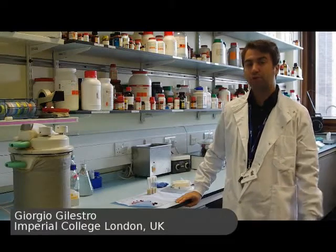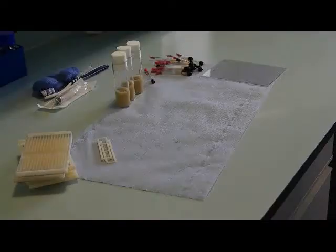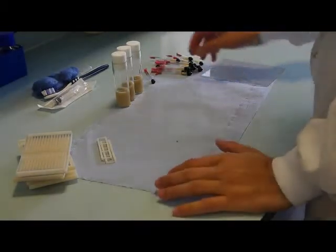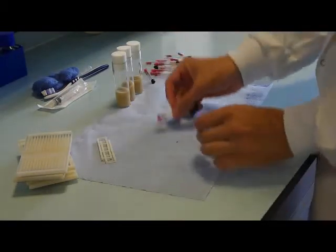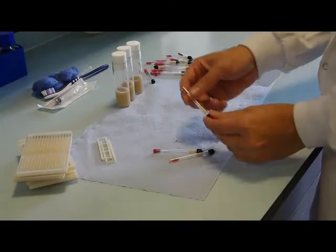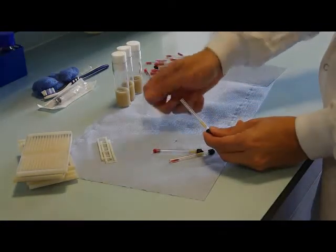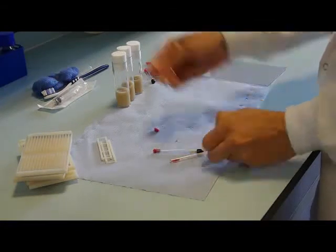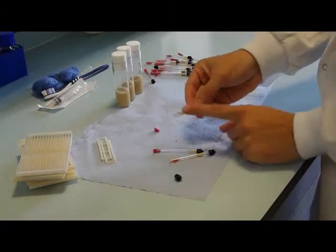Hi! In this video I'm going to show you how to prepare an arena for video tracking. Detection of movement based on the traditional split beam system is carried out using little glass tubes, like these ones. Single flies are hosted into each tube, trapped with cotton wool on one side, and a plastic cup or wax on the other. Food is also provided.